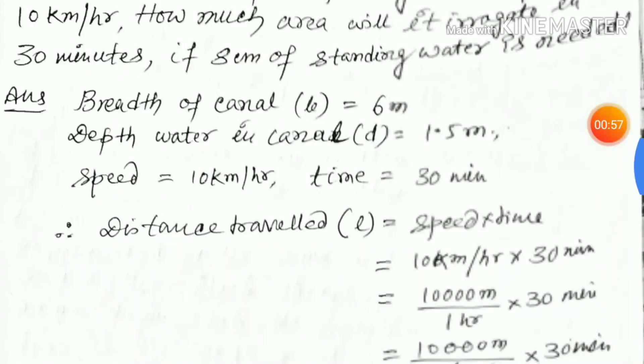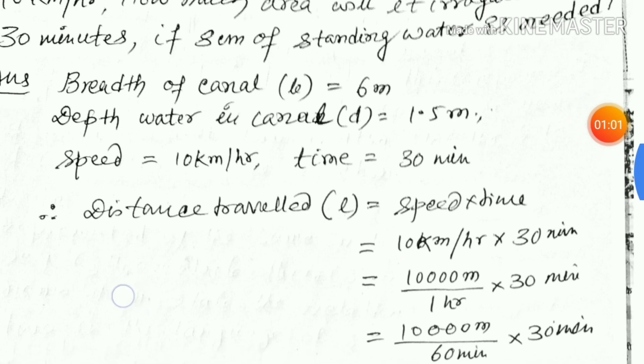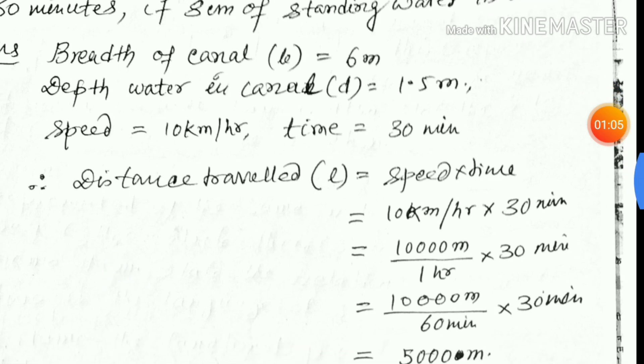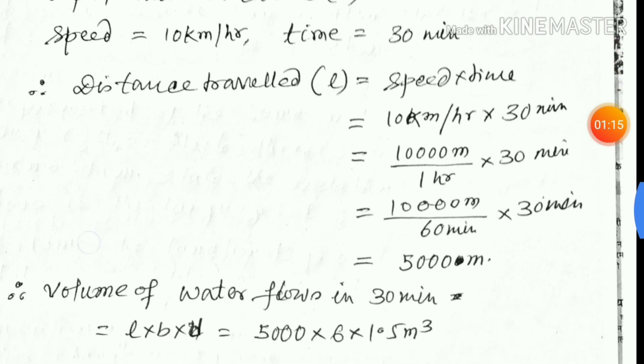Distance traveled, L equals speed into time. Speed is 10 kmph, time is 30 minutes. 10 kmph means 10,000 meter per 1 hour. 30 minutes - 1 hour means 60 minutes, minute minute cancel - 5,000 meter.